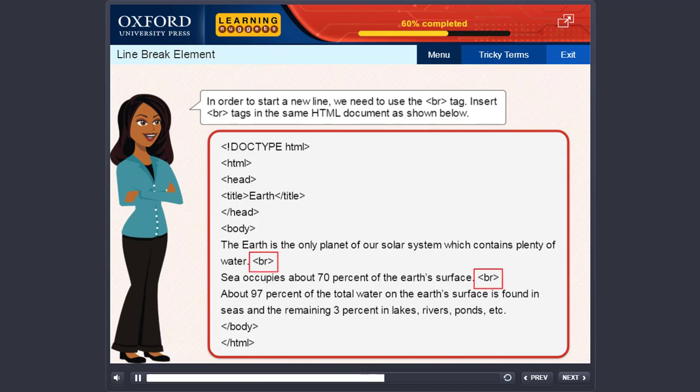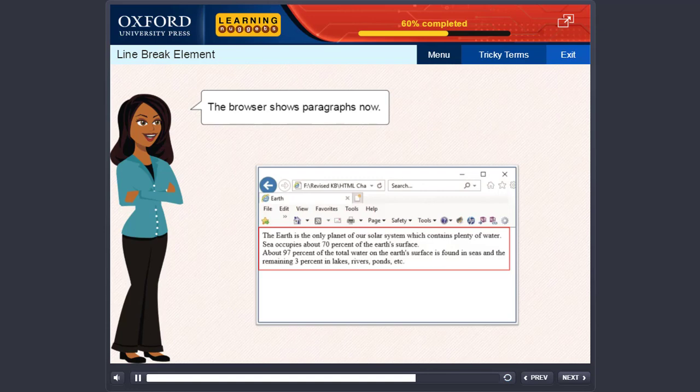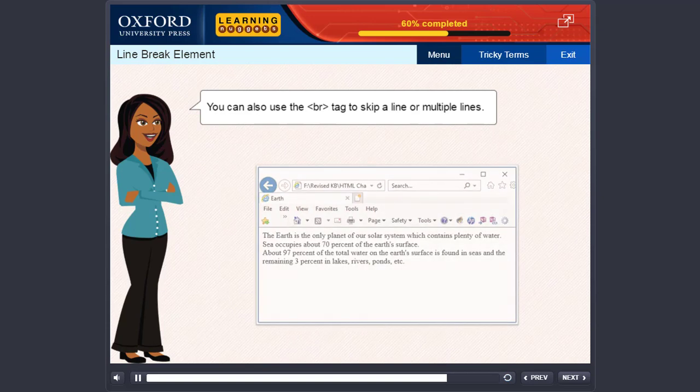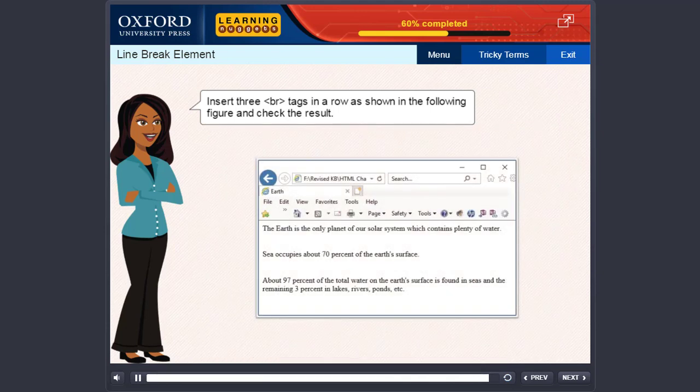Insert BR tags in the same HTML document as shown below. The browser shows paragraphs now. You can also use the BR tag to skip a line or multiple lines. Insert three BR tags in a row as shown in the following figure and check the result.